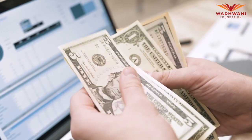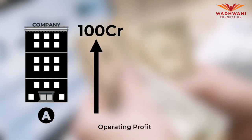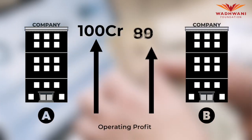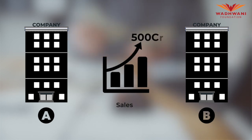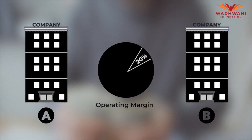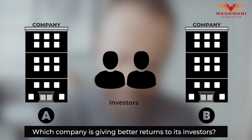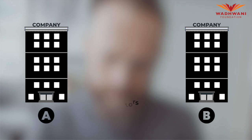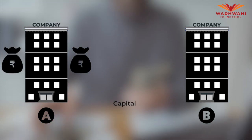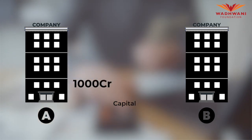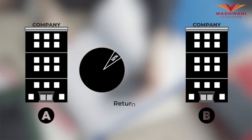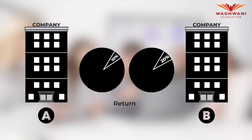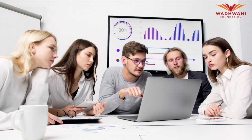How to read this: say there are two companies — Company A and Company B — both generating operating profit of 100 crore on sales of 500 crore, so both have a 20% operating margin. But Company A requires 1,000 crores of capital to generate that 100 crore return, whereas Company B needs only 500 crores. This means Company A has a 10% return whereas Company B offers a 20% return. This is where ROC comes into picture.